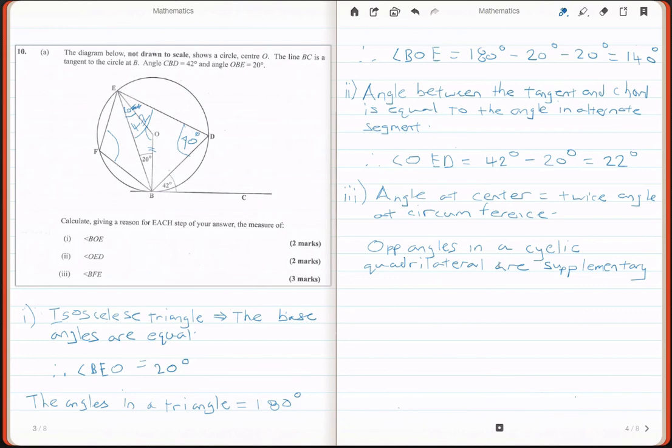What does it mean to be supplementary? Supplementary basically means they add up to 180 degrees. Therefore, the angle at D plus this angle here, the opposite angle to it, should equal 180 degrees. Now our goal is to solve angle BFE which is the angle at F. Therefore F will be equal to 180 degrees minus 70 degrees which should give us 110 degrees.